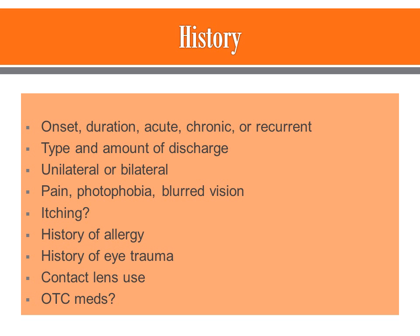When thinking about history, your CARTS framework comes into play. You want to ask about location, onset, and duration — is this an acute event or something chronic and recurring? How much discharge do they have and when did the discharge start? The symptoms are going to vary, so you need to ask specific questions.